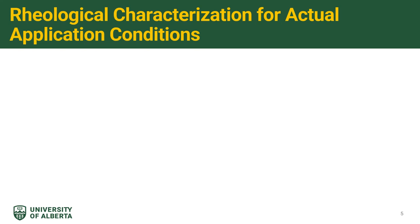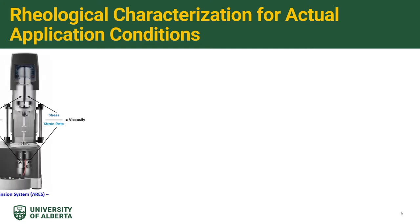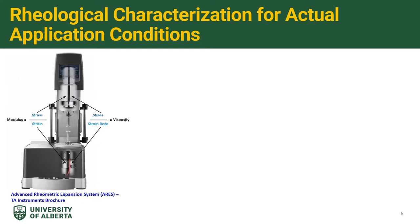Now, let us move on to how the characterization of these products is conducted for actual application conditions. The image on the left is an advanced rheometric expansion system. It is a well-known strain-controlled rheometer that is capable of subjecting a test material to either a dynamic or a steady shear strain and then measuring the resultant torque values expended by the sample in response to the imposed shear strain.